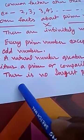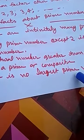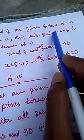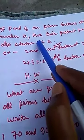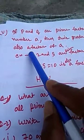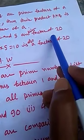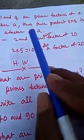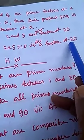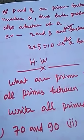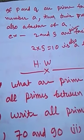Fourth: there is no largest prime number — we cannot find the largest prime. Fifth: if p and q are prime factors of a number A, then their product p × q is also a factor of A. For example, 2 and 5 are prime factors of 20, so their product 2 × 5 = 10 is also a factor of 20.